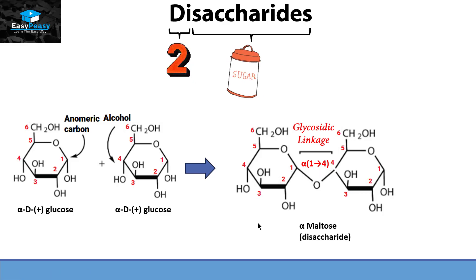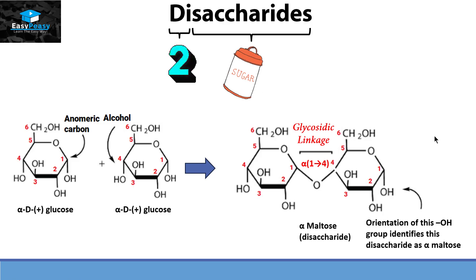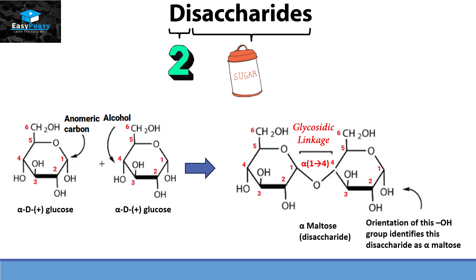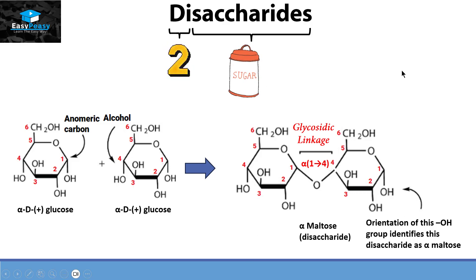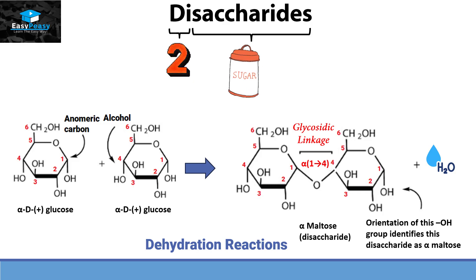Why do we use the word 'alpha' here? The alpha designation is determined by the OH group present on carbon number one. So the orientation of the OH on carbon number one determines that this is an alpha-maltose unit. In this reaction, a water molecule is also released, so this reaction falls under the category of a dehydration reaction.